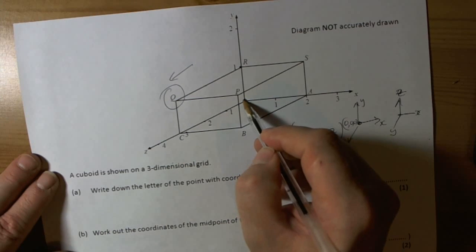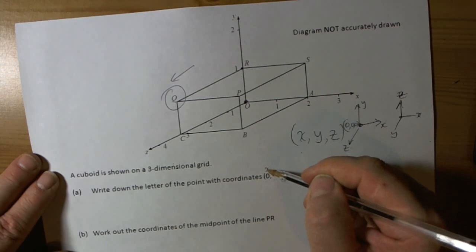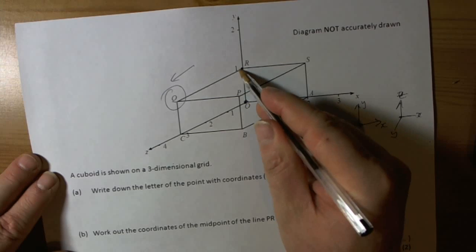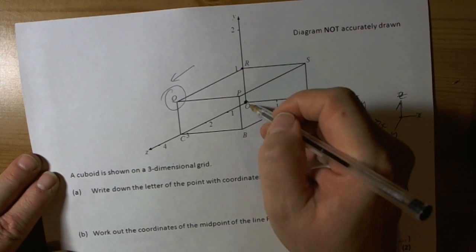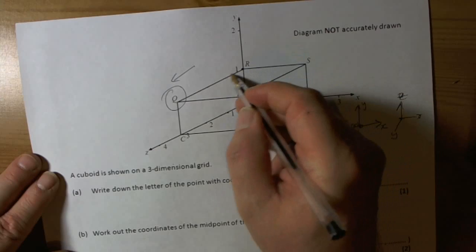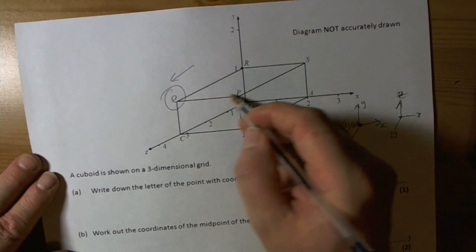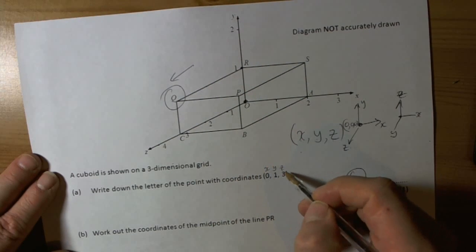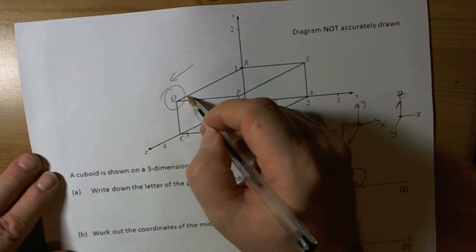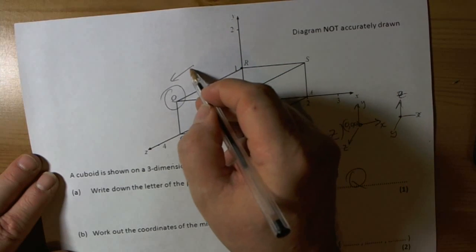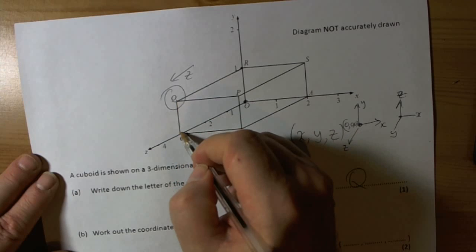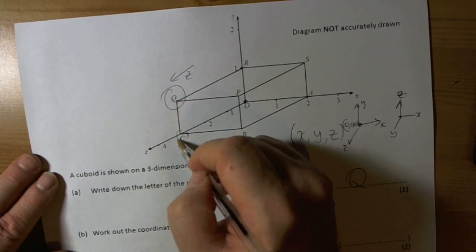So we started at 0, we didn't move because the X number was 0. We then went up to the top of the box, because the Y number says go to 1. And on the top of the box every Y number is 1. And then it tells us to go Z equals 3. So we came in the Z direction, and we came along to this point here, which is above 3 on the Z axis.